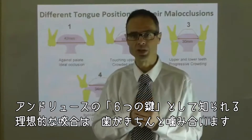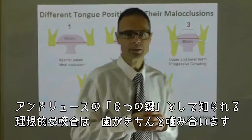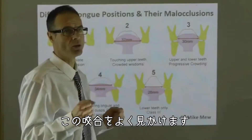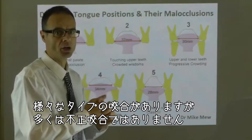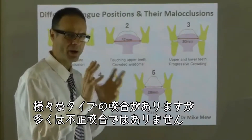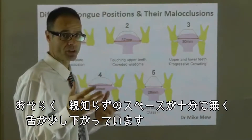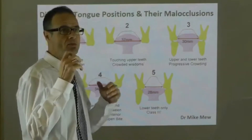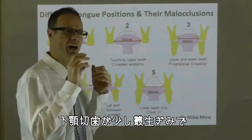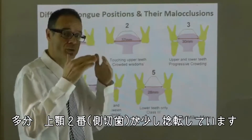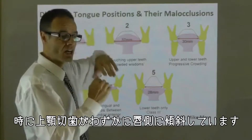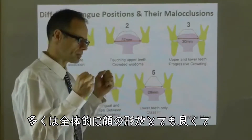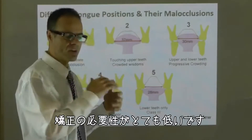The next example — example number two — is the wider variety of occlusions I would often see. It's not really a malocclusion usually. They probably have crowded wisdom teeth. The tongue is down a little bit, with an intermolar width of around 37 millimetres. There can be a little bit of lower incisor crowding; maybe the lateral incisor, tooth number two, is a little rotated. Sometimes there are slightly retroclined upper incisors. Usually a pretty good general facial shape and very low need for orthodontics.